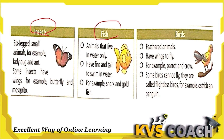Next, let's discuss insects. Insects have six legs. Have you seen any ant or caterpillar in your house? They are all insects — six-legged animals. Examples of insects are ladybug and ant.